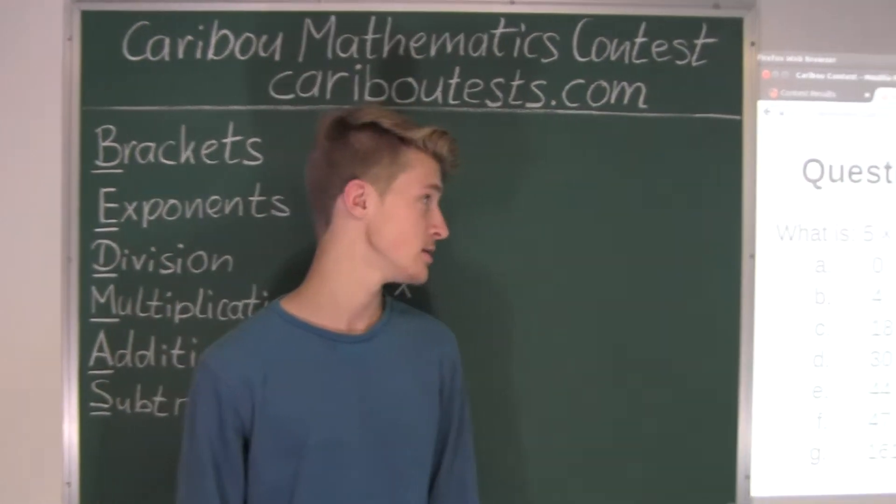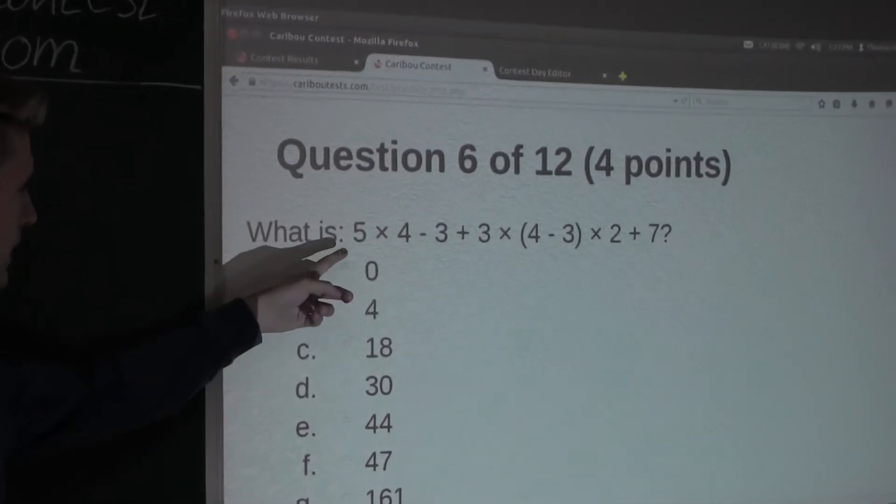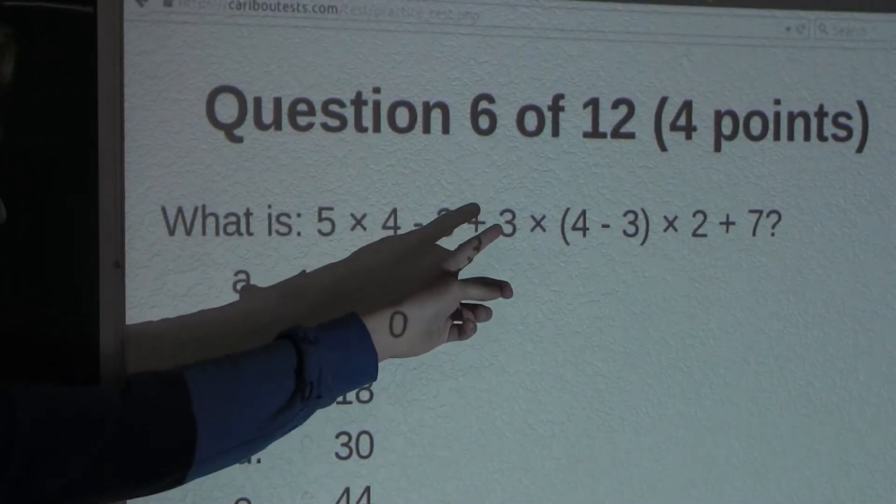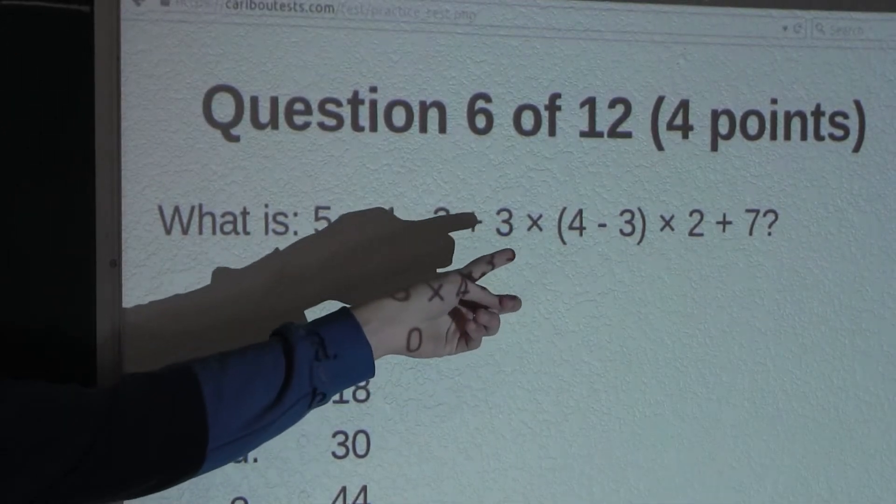So, the question is, what is 5 times 4 minus 3 plus 3 times, and in brackets, 4 minus 3, times 2 plus 7?